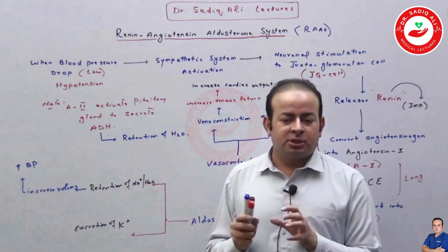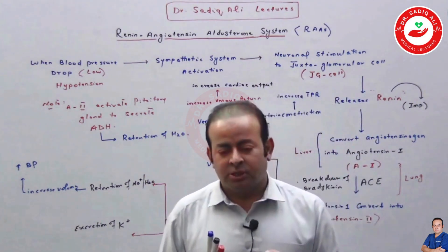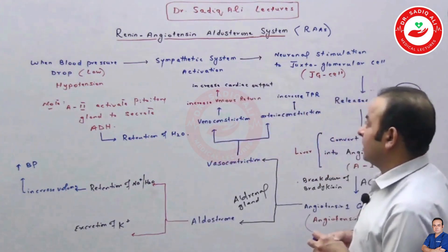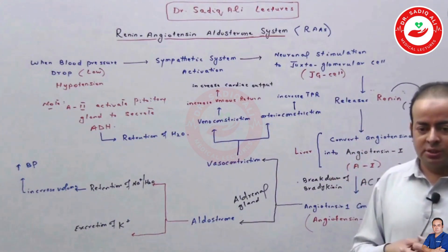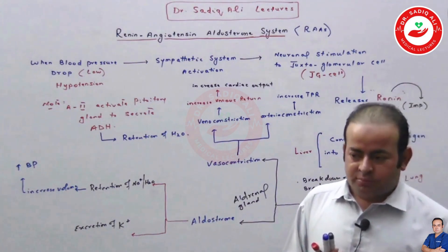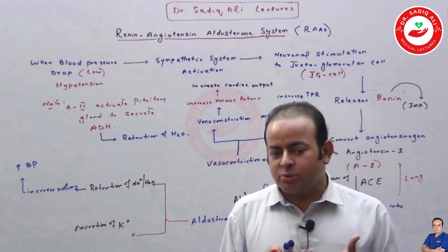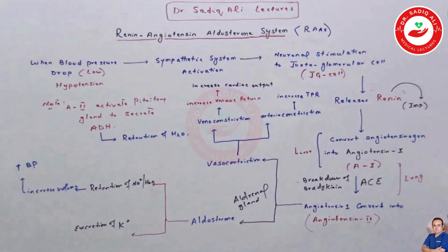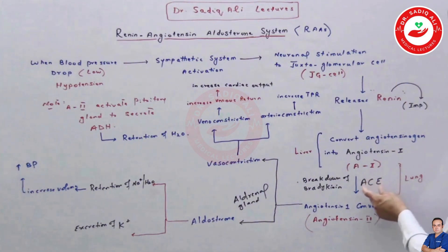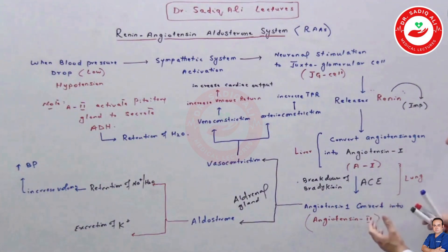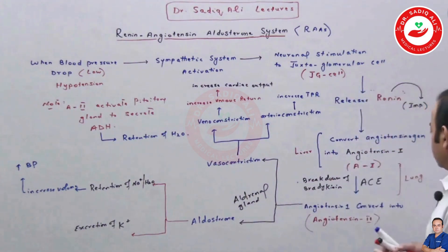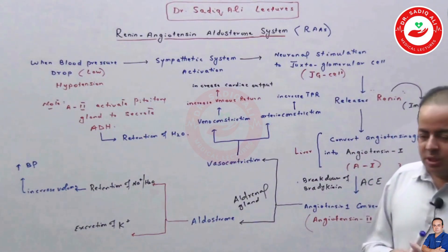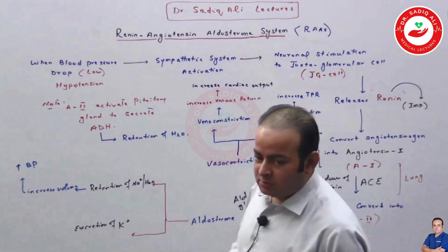RAAS is the system in the body that regulates blood pressure in the long term. In the next lecture, I will discuss antihypertensive medications based on this same system. If a patient comes with high blood pressure, one way to lower it is to use ACE inhibitors — drugs that block ACE, preventing conversion of angiotensin 1 to angiotensin 2. Without angiotensin 2, there is no vasoconstriction, no aldosterone release, no plasma volume increase, and BP falls. Examples include captopril, enalapril, and ramipril.